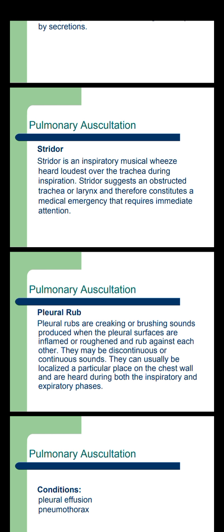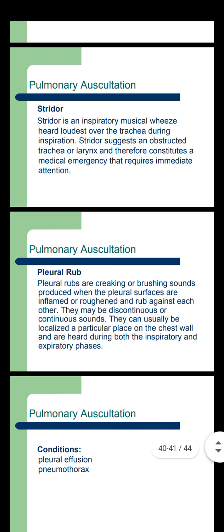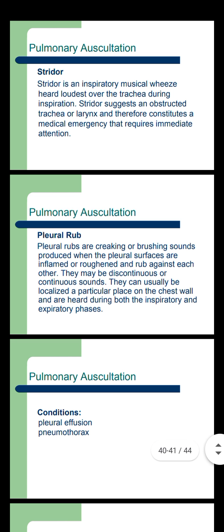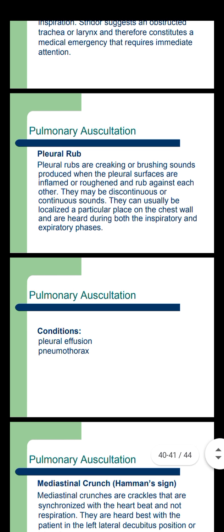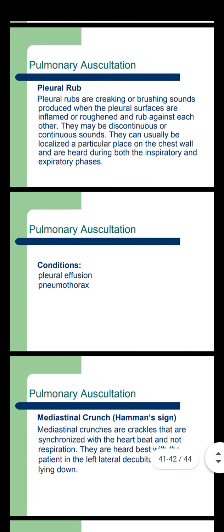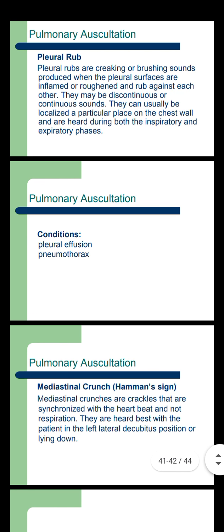Pleural rub: pleural rubs are creaking or brushing sounds produced when the pleural surfaces are inflamed and rub against each other. They may be discontinuous or continuous sounds. They can usually be localized to a particular place on the chest wall and are heard during both the inspiratory and expiratory phases. Conditions include pleural effusion and pneumothorax.